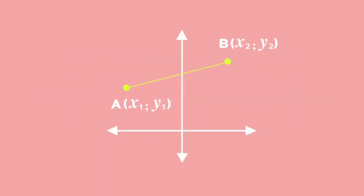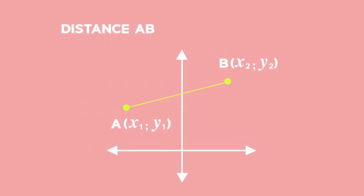Do you remember how to find the distance between two points A and B? We find the difference between x values of the points A and B and square this.